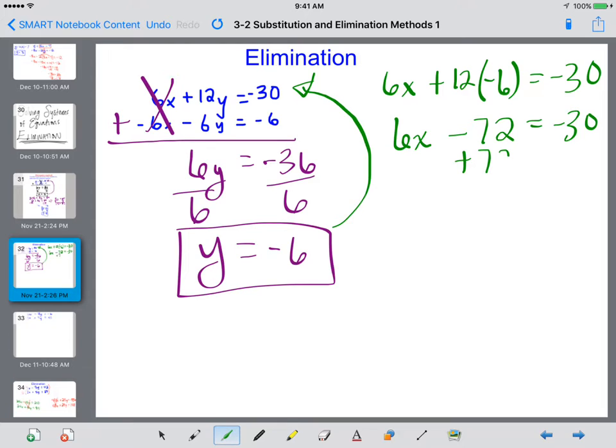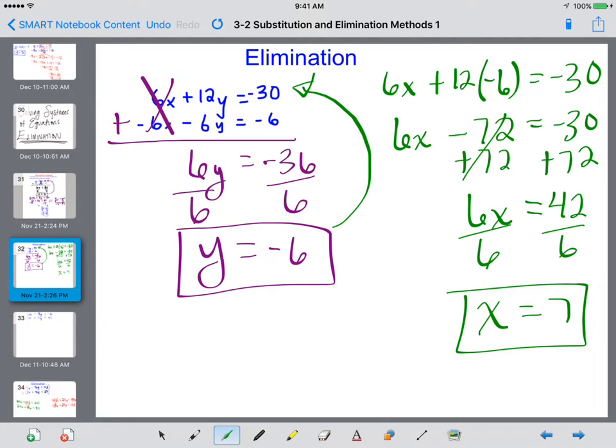So I'm going to add 72 to both sides. So I get 6x equals 42, divide by 6, and we get x equals 7.